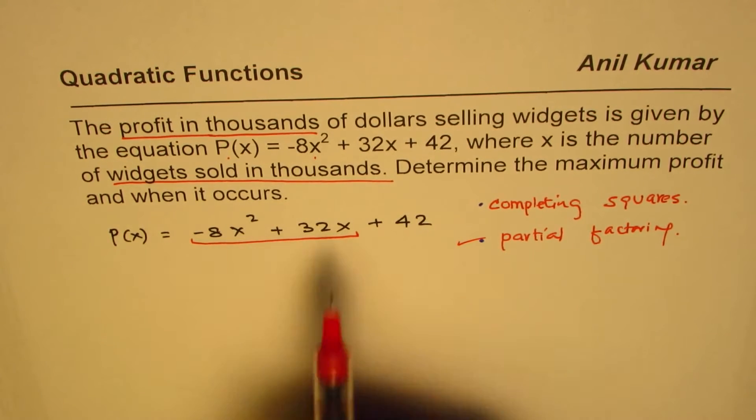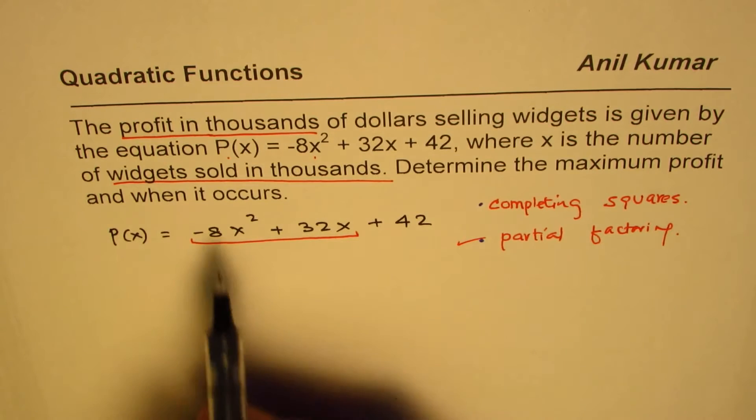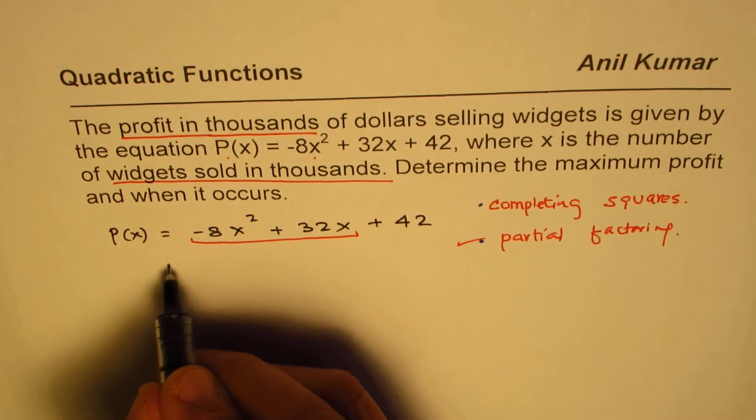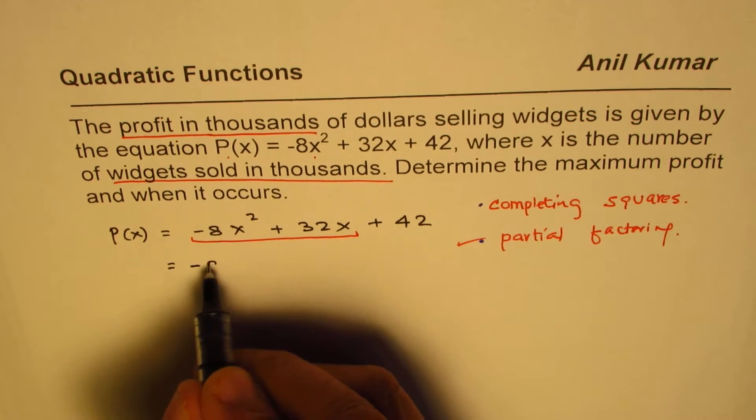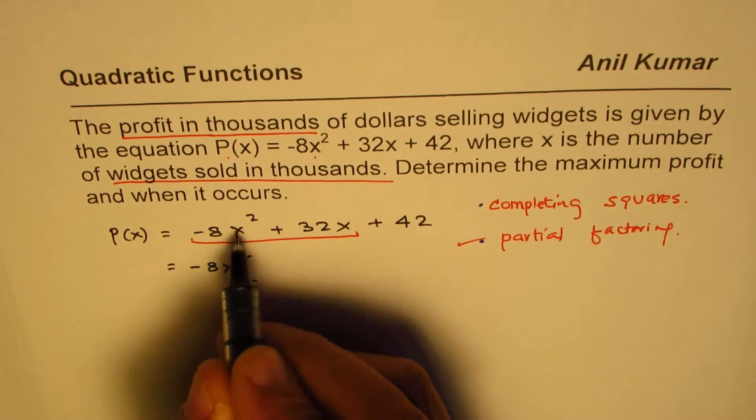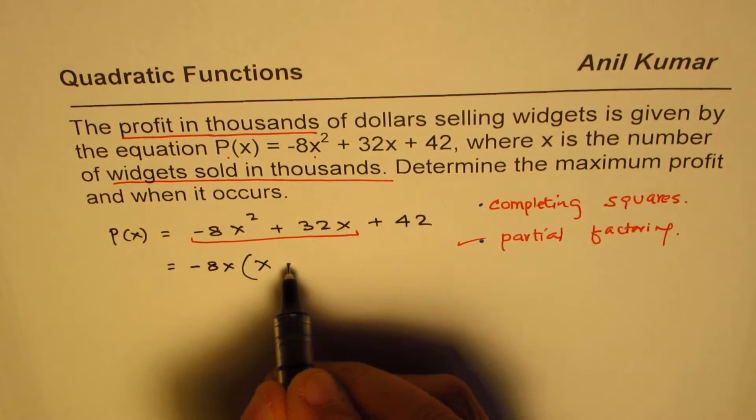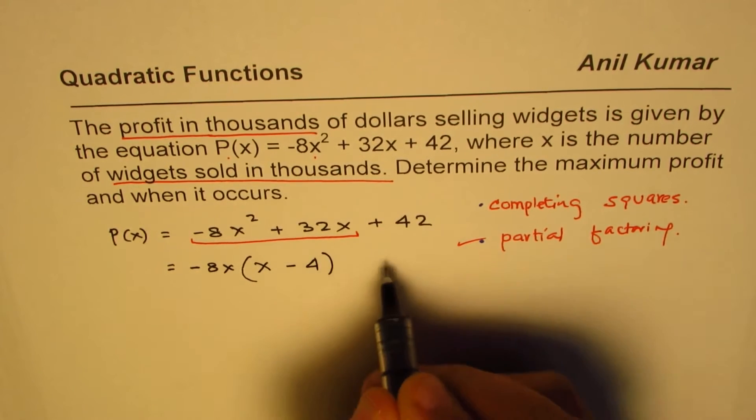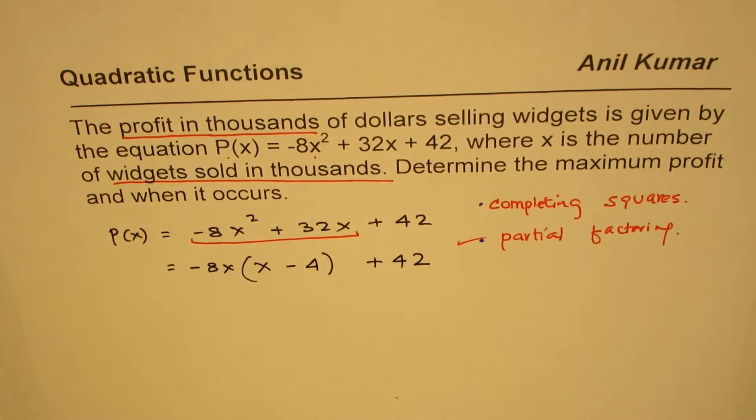In completing squares also you take these two terms. Now we are doing partial factoring method. So when you take these two terms, what is common between them? Minus 8x is common. So that gives you minus 8x times (x minus 4) plus 42. So that is what you get.